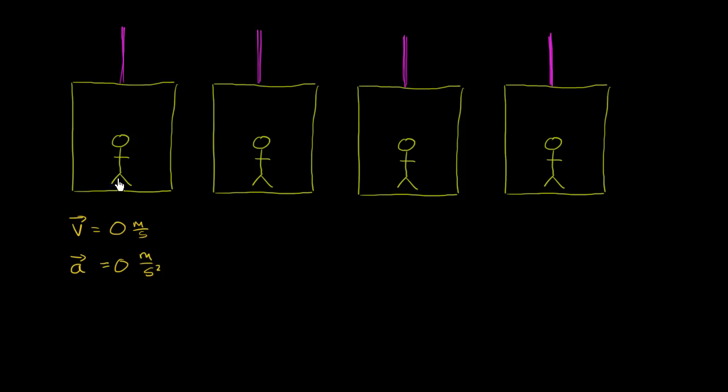Let's say I'm sitting in this transparent elevator and I press the button, so the elevator begins to accelerate upwards. In this next screen, the acceleration is two meters per second squared. I'll use the convention that positive means upwards and negative means downwards. We're only operating in this one vertical dimension.